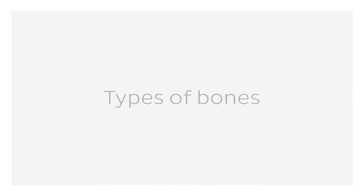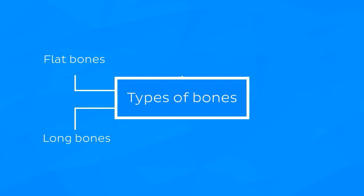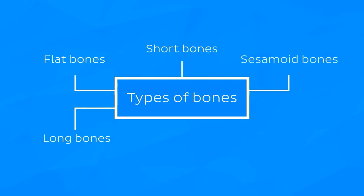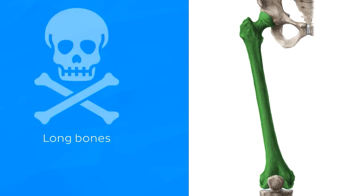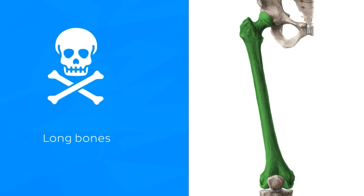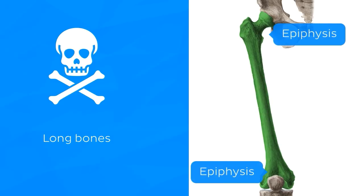There are a few different types of bones found in the body. These include long bones, flat bones, short bones, sesamoid bones, and irregular bones. Long bones, like the femur here, are mostly found in the limbs. These are the types of bones your dog likes to chew, or those that you might see if you somehow manage to find yourself on a pirate ship. Long bones have three regions with distinct structures: a diaphysis in the middle and two epiphyses at either end.